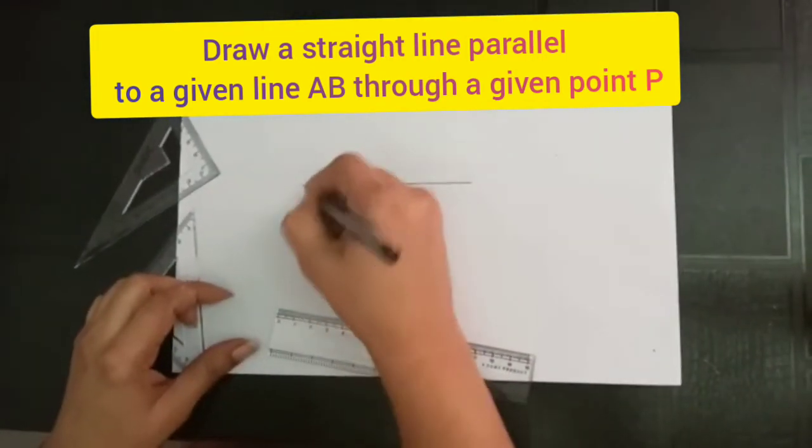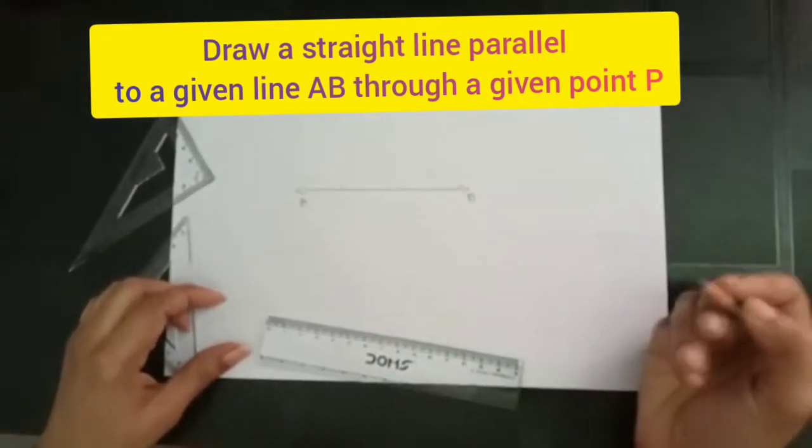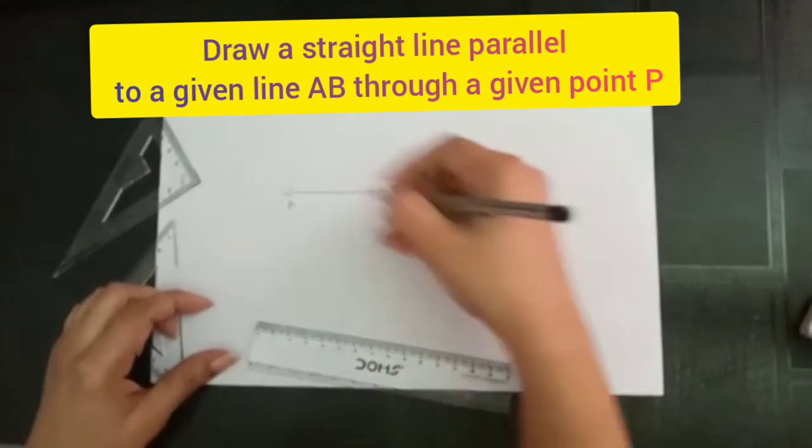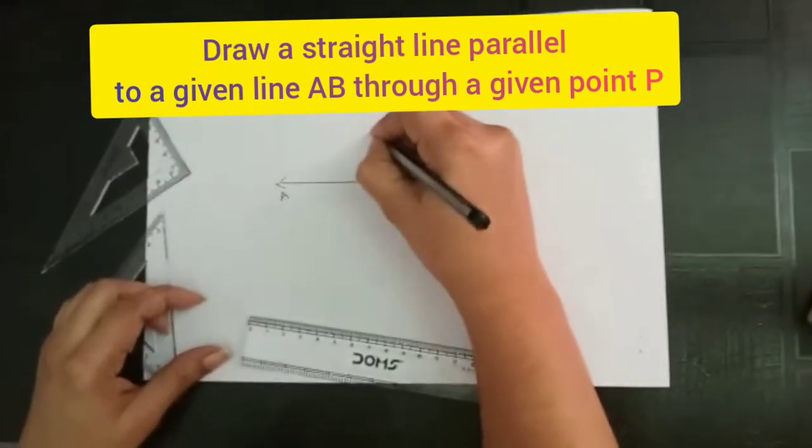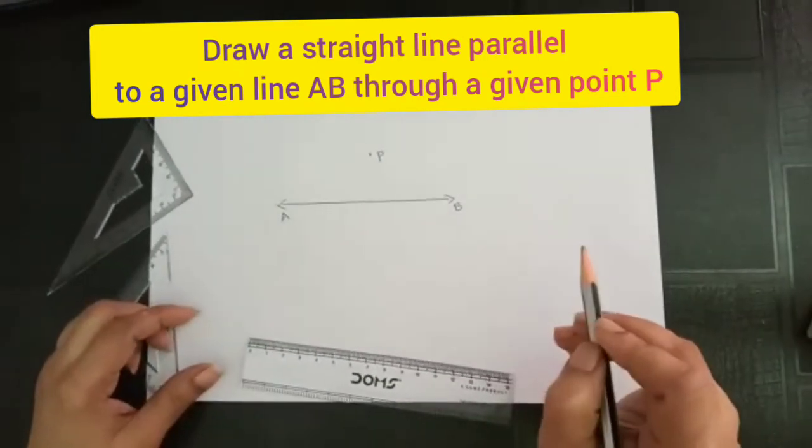The starting point is A and this endpoint is B. We have another point P outside the line, through which the parallel line will pass.